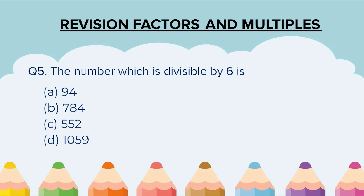Question 5. The number which is divisible by 6 is: 94, 784, 552, 1059.